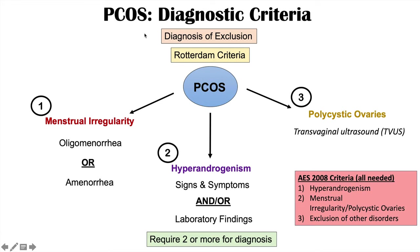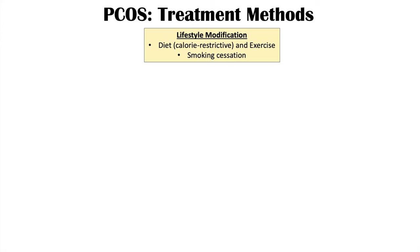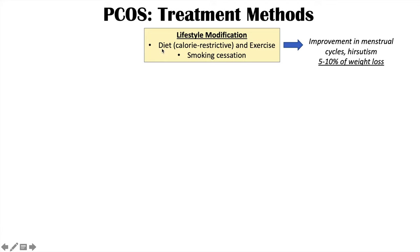Once the diagnosis is made, how do we treat PCOS? The first part of treatment is lifestyle modification — a calorie-restrictive, low-carbohydrate diet and exercise are very critical. Smoking cessation is always recommended. With excellent lifestyle modification, including at least 5 to 10% weight loss, there can be improvement in menstrual cycles and in signs and symptoms of hirsutism.